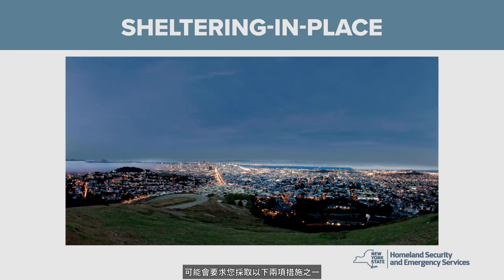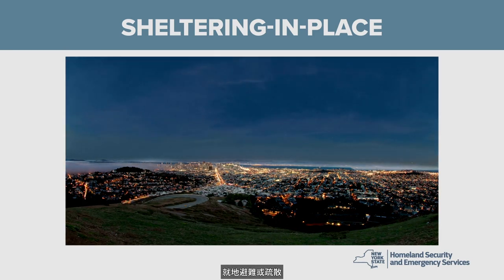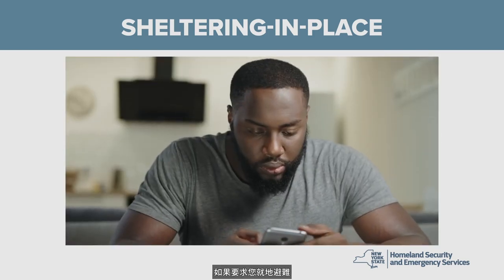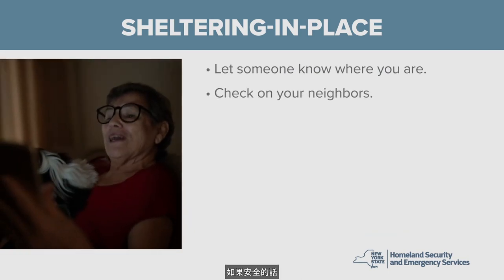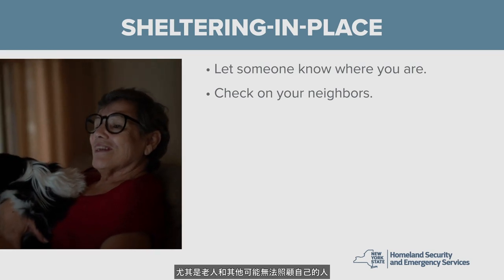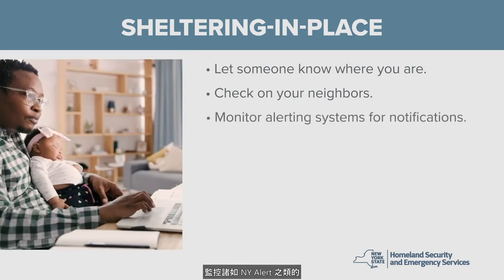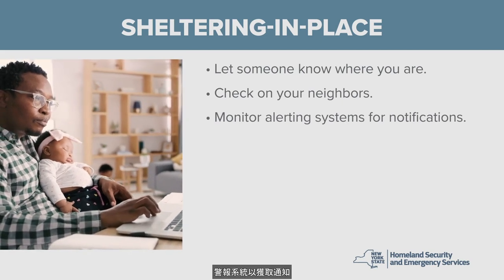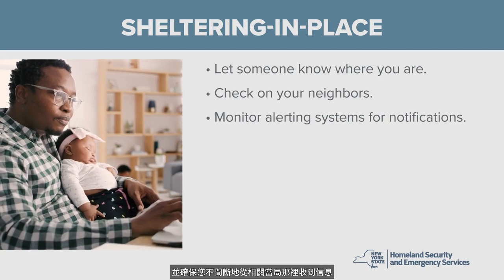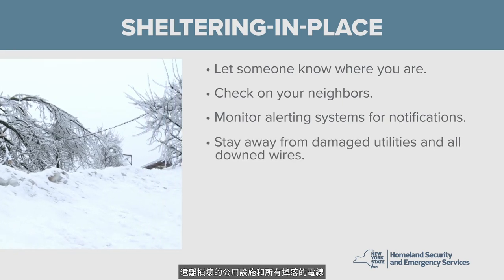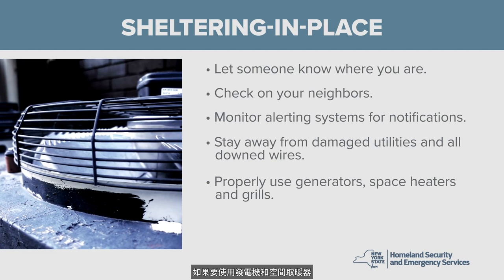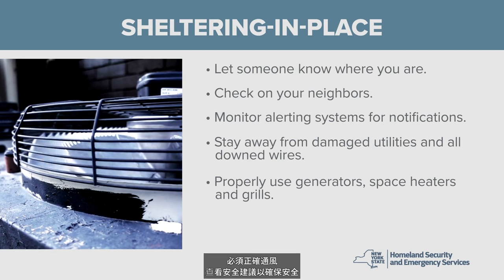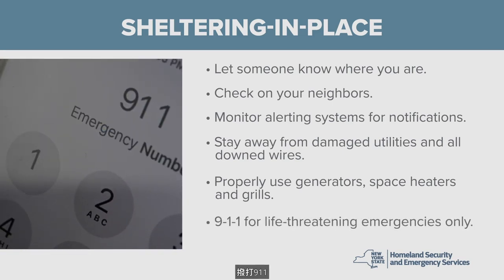In the event of a major emergency, you may be asked to take one of two actions: either shelter in place or evacuate. If you are asked to shelter in place, take the following steps. First, let someone know where you are. If it is safe to do so, check on and help your neighbors, especially seniors and others who may not be able to care for themselves. Monitor alerting systems such as NY Alert for notifications. Stay away from damaged utilities and all downed wires — treat any downed wire as if it were live. Generators and space heaters must be properly ventilated. And remember to use 911 for life-threatening emergencies only.